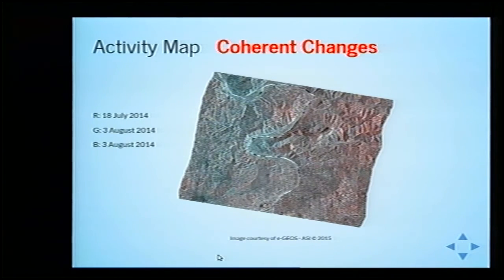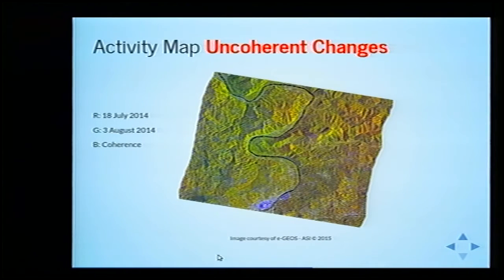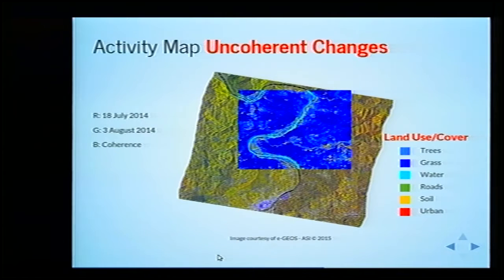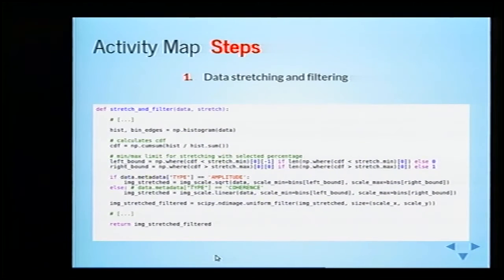If we do the same with another kind of RGB composite using coherence in the blue layer instead of amplitude, you can produce incoherent changes that have more detailed information. We use this to produce what we call a land use or land cover layer, which tells you in a semi-automatic way what is on the area you are viewing — where the water is, where the urban areas are, where there is soil, green grass, trees, and so on. We also use this layer to produce the activity map.